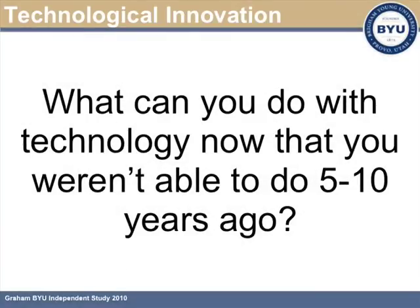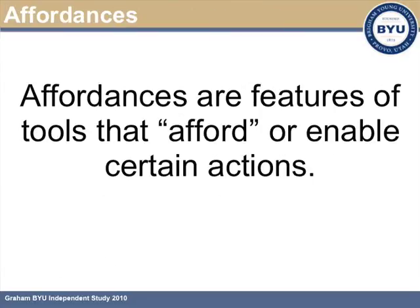This question led into a discussion about the affordances or features of tools that allow or enable certain kinds of actions. For example, a tool that allows you to see someone else in high fidelity affords a different kind of interaction than a tool that's text-based.